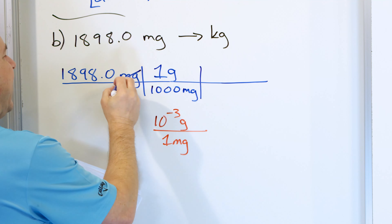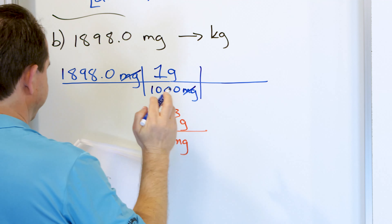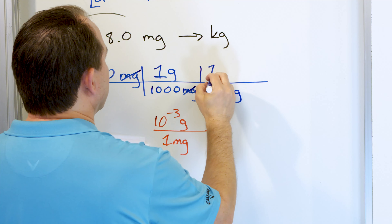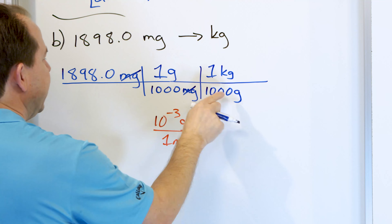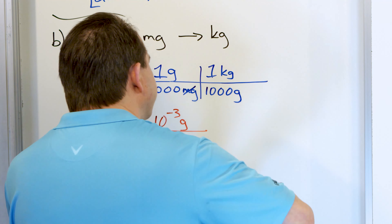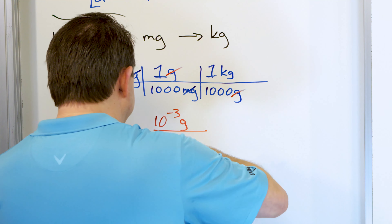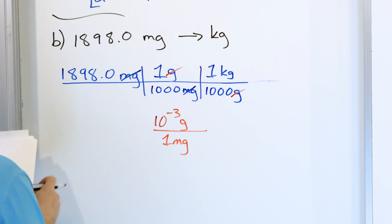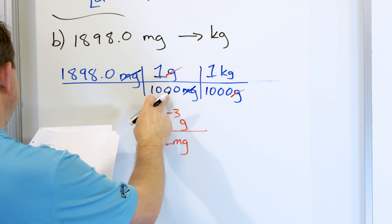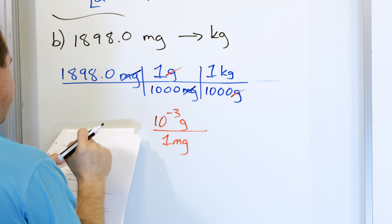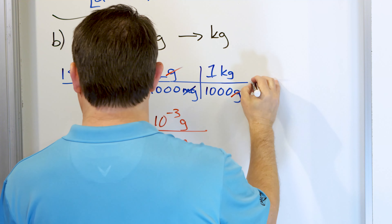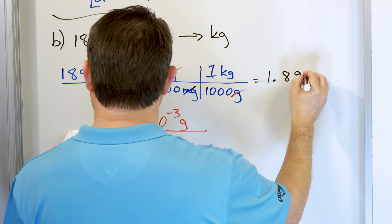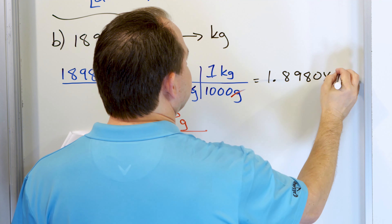Now we have canceled the milligrams, so we have grams. And then we could just say that 1,000 of these grams is the same thing as one kilogram. We put the unit this way so that the grams on the bottom and the top cancel. So now we can write the final answer. If we take 1,898.0, divide by a thousand, divide by a thousand again, we're going to get 1.8980 times 10 to the minus three kilograms.